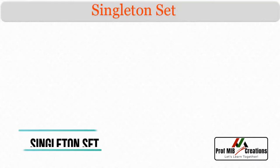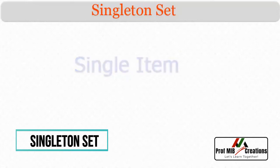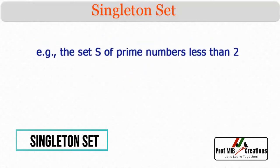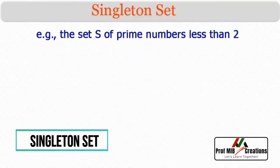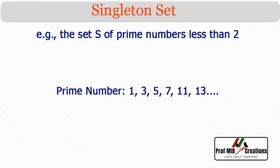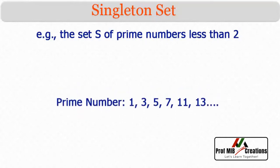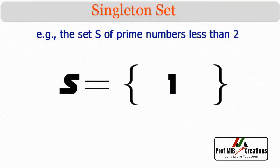Second, singleton set. A set with a single item is called a singleton set. For example, the set of prime numbers less than 2. We know that there is only a single prime number less than 2, that is 1. Hence it is a singleton set and can be represented as {1}.